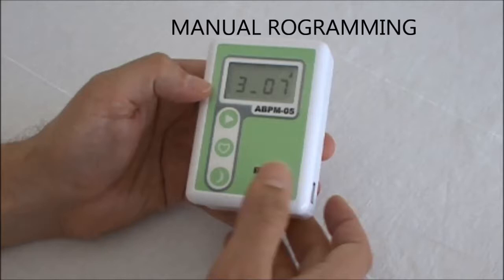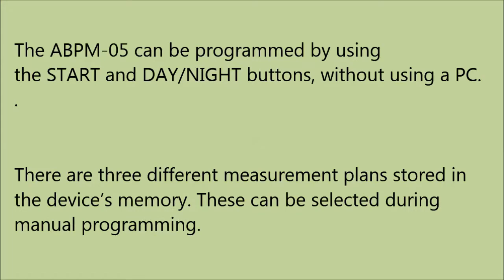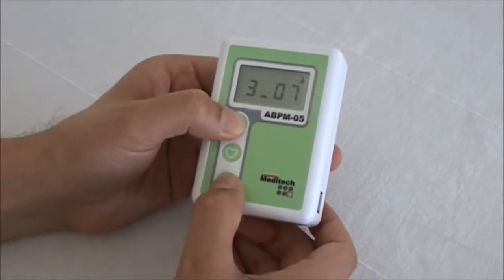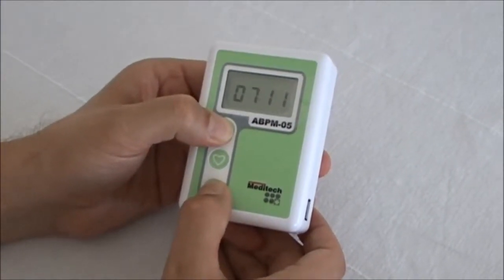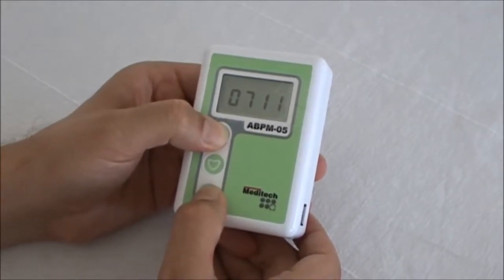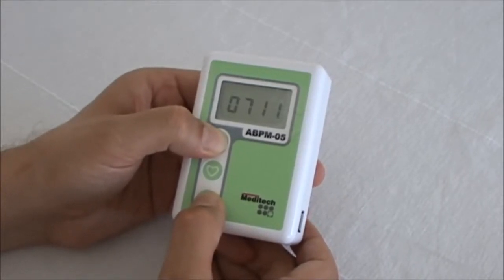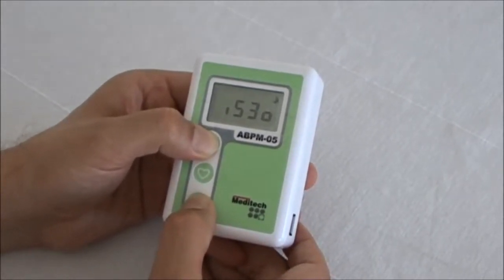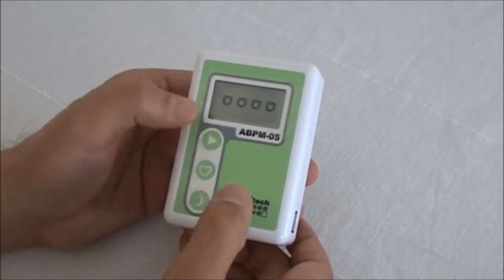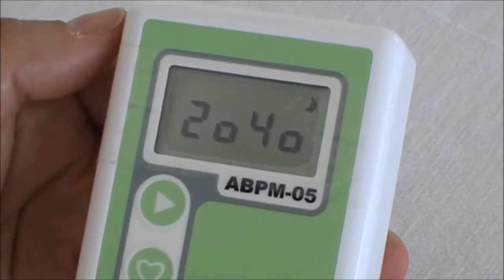Through the process of manual programming, one of the three permanently stored programs is selected and activated. Selection is by simultaneously pressing and holding the two buttons. Activation is by lifting the fingers off when the desired program ID appears on the LCD. Confirmation of the selection will be indicated by four blinking zeros, and the programming ID will also be displayed briefly.